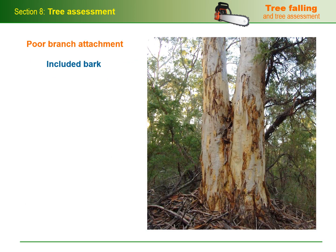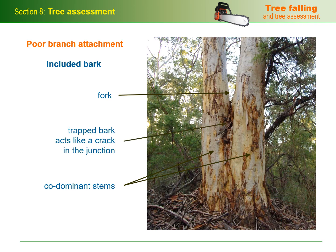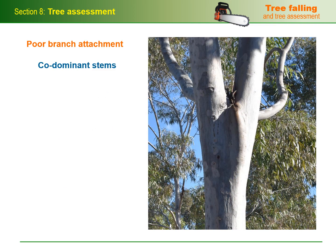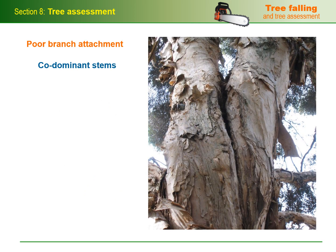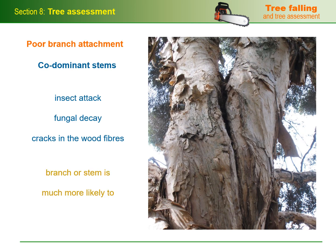Included bark occurs when the angle of the fork between the branch and stem, or between two codominant stems, is too narrow to allow them to both grow in girth without trapping bark in the junction. The trapped bark acts like a crack in the junction because it separates the wood fibers on either side. As the branch and stem continue to grow, they push the union apart and make it progressively weaker. In some trees with codominant stems, a rib formation develops on either side of the weakness to help support the stem — the pointier the rib, the larger the internal crack is likely to be. When a weak union develops additional defects such as insect attack, fungal decay or cracks in the wood fibers, its structural problems become even more serious, and the branch or stem is much more likely to fail under stress.